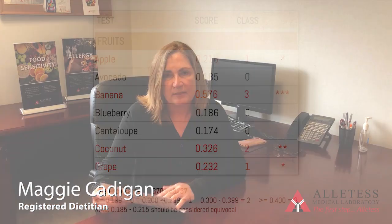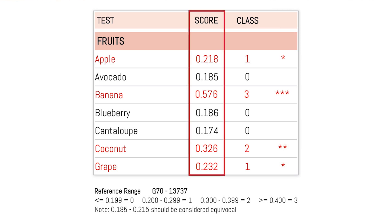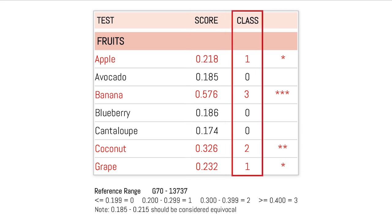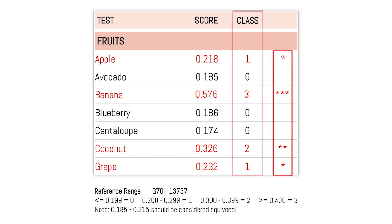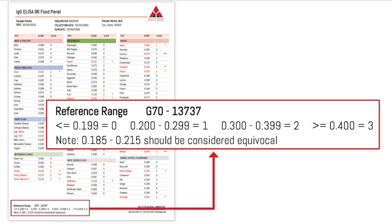For this patient, I'm going to use apple as an example, but it's the same for all the foods. The first thing I would do is look at the score, and then next to that you'll see a class, and next to the class you'll see asterisks. You can get a class 1, a class 2, a class 3. You also want to look at the reference range down in the bottom left corner to get more information.